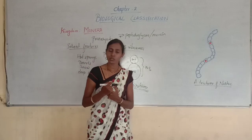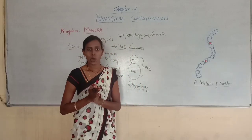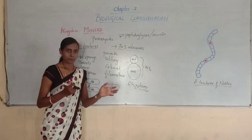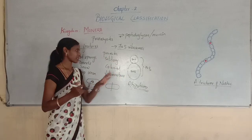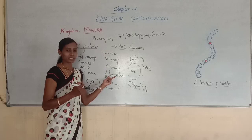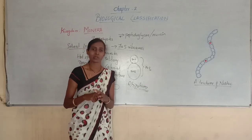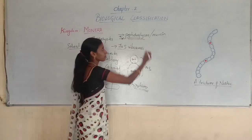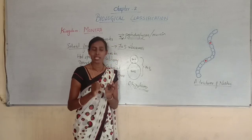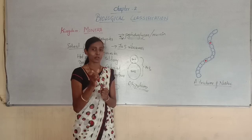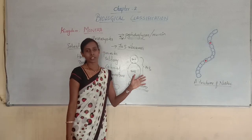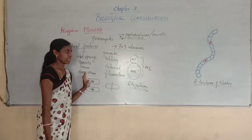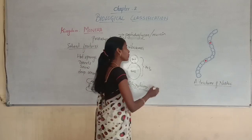To summarize the salient features: organisms in Kingdom Monera are most primitive, microscopic, simple, unicellular, and prokaryotic. They are the most abundant organisms, present everywhere, and can live in extreme habitats like hot springs, deserts, snow, and deep oceans. They may live as parasites, and may be solitary, colonial, or filamentous. As prokaryotes, they lack a true nucleus and membrane-bound organelles but contain 70S ribosomes. Their cell wall is made of peptidoglycans or murein.